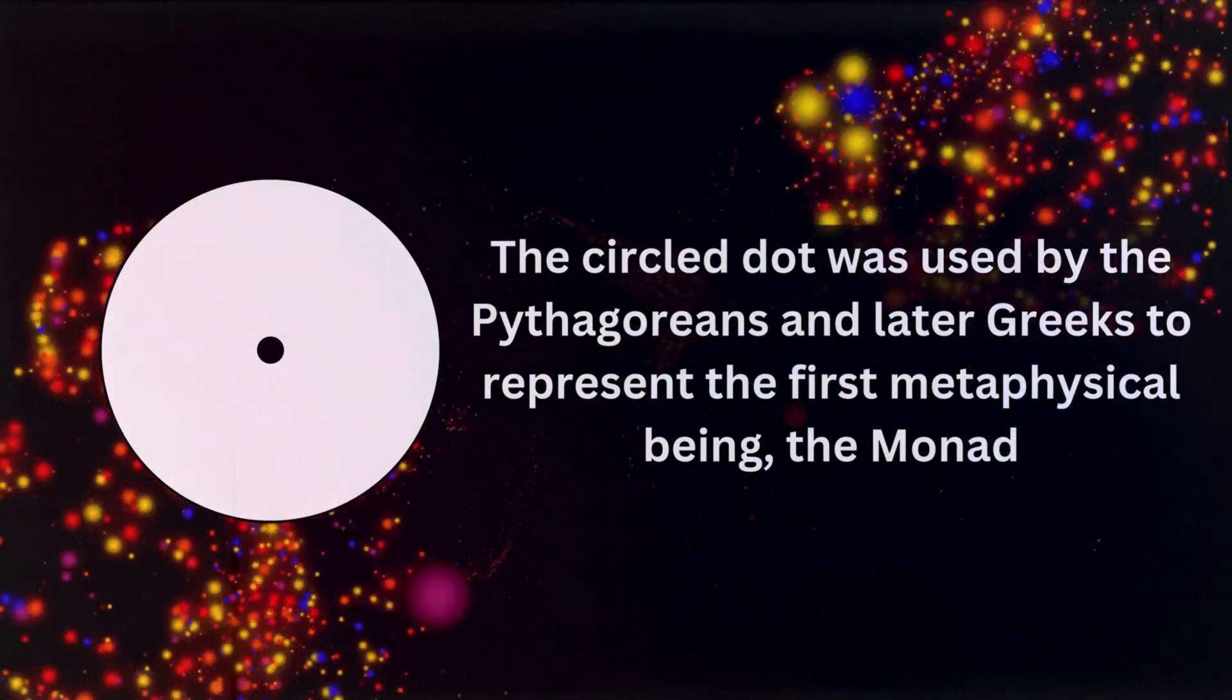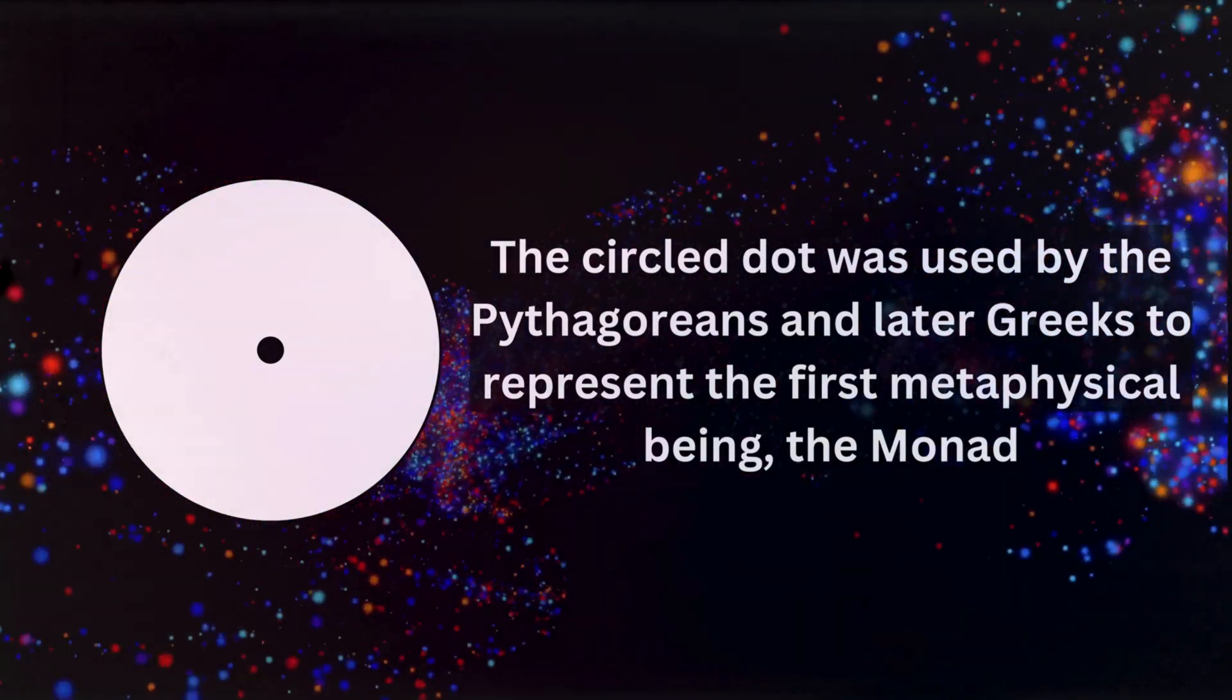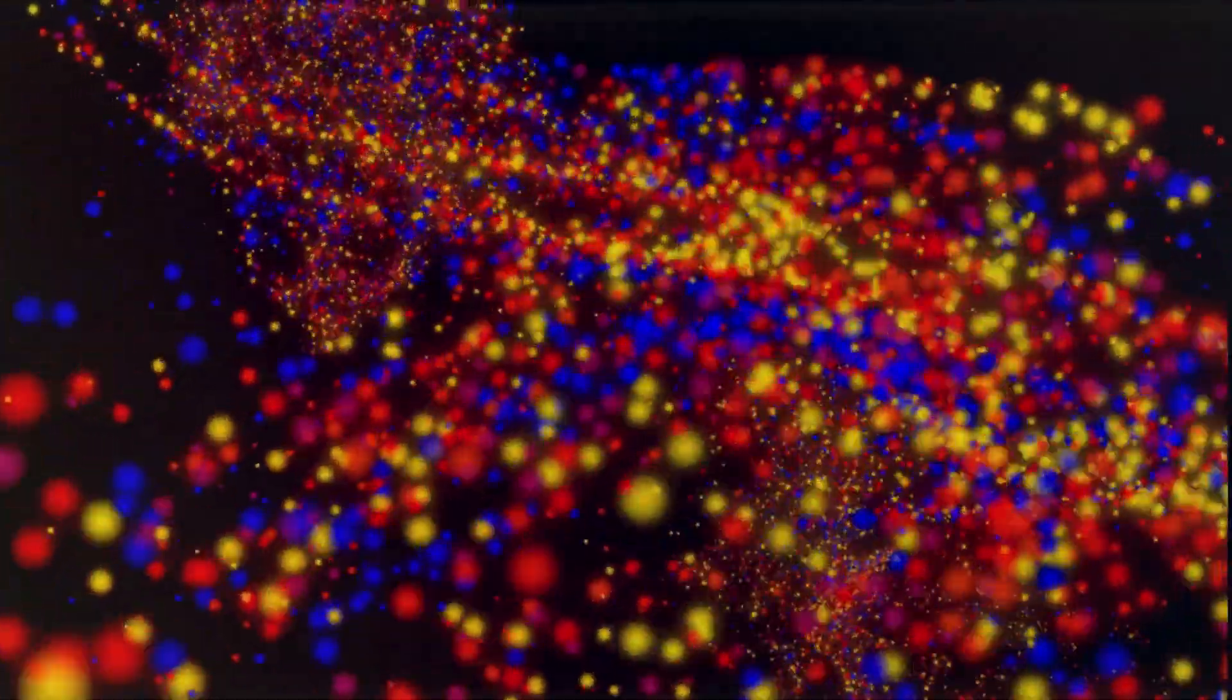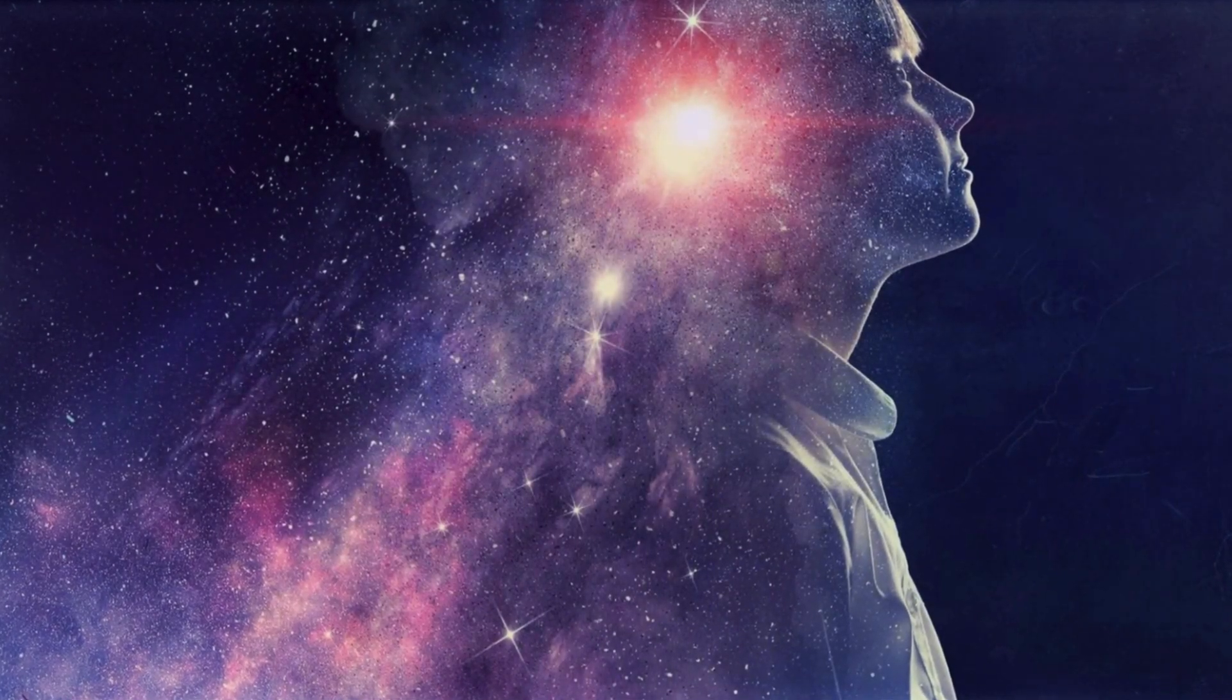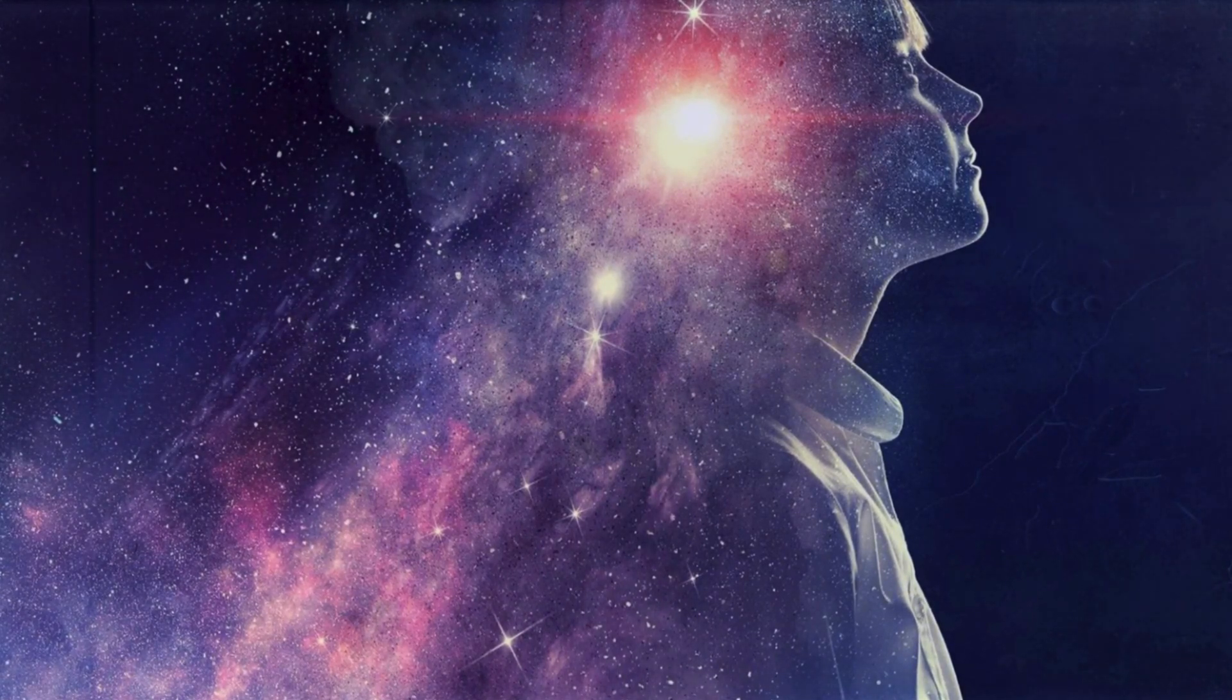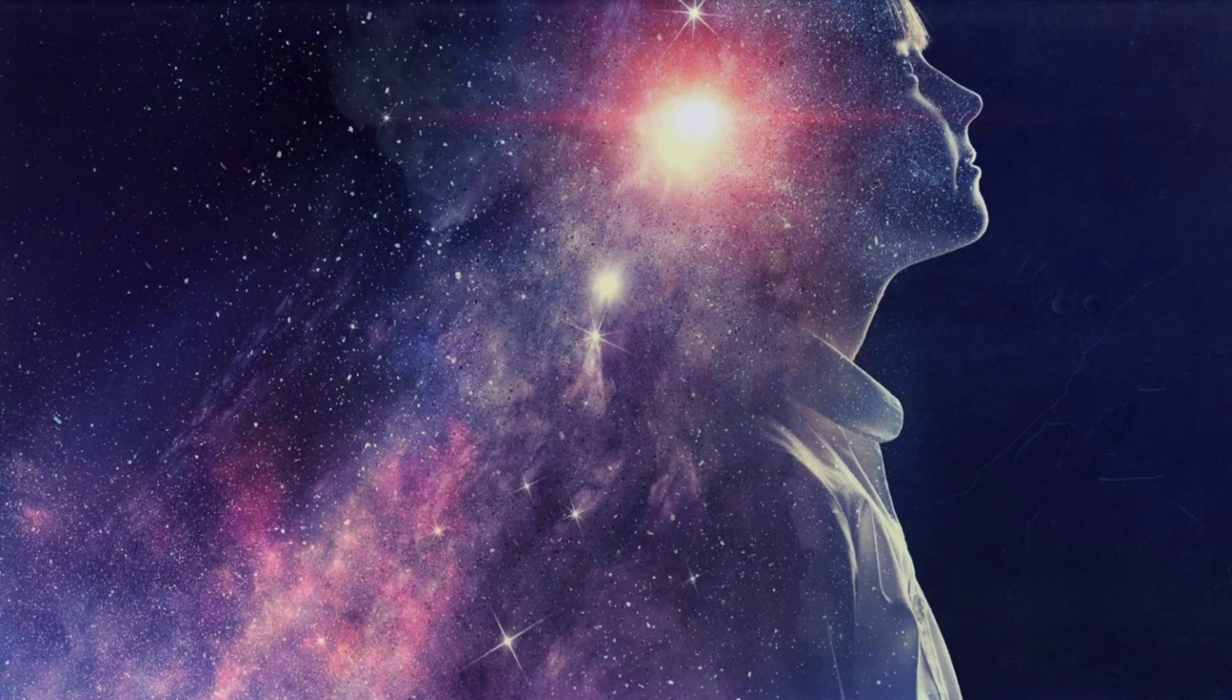This is what Leibniz famously called pre-established harmony, a concept that sought to resolve philosophical questions about causality and the relationship between mind and body. For Leibniz, everything in the universe, from the smallest atom to the human soul, was composed of monads, each reflecting the entire cosmos from its own unique perspective. This idea allowed him to maintain both a rationalist and a theistic worldview, as he saw monads as expressions of divine reason.